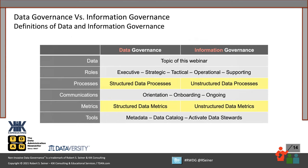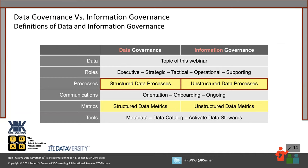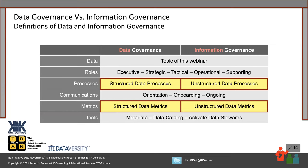When we look at data governance versus information governance side by side using those six core components: the data component is the topic of this webinar — the difference between data and information. The roles stay the same. Communications stay the same — you'll need to orient people to governance, onboard them, and provide ongoing communication. The tools are somewhat the same — you've got metadata about unstructured data too, and many data catalog tools can collect metadata about unstructured data. You need to activate your data stewards as part of your program. We should focus on defining the structured data processes and the unstructured data processes, and there may be specific metrics focused on structured data and others focused on unstructured data.